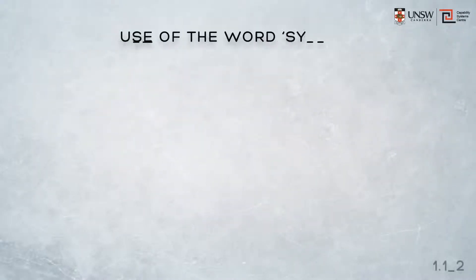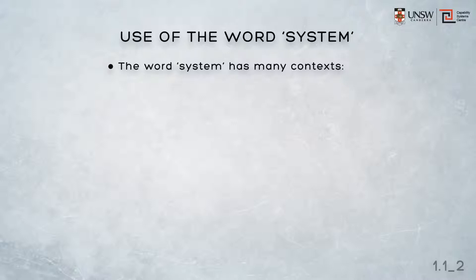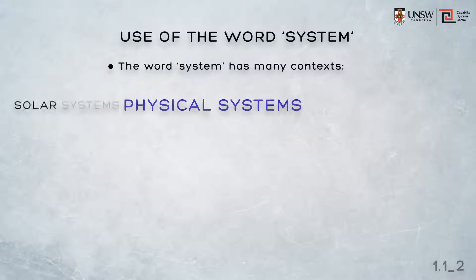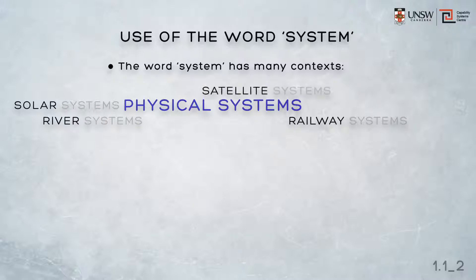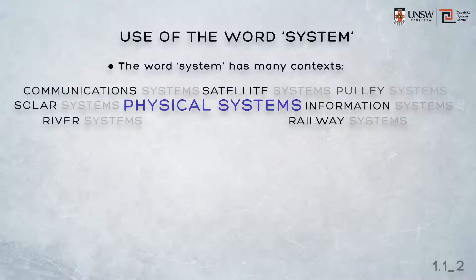That's because the word system has many contexts. There are physical systems, such as solar systems, river systems, railway systems, satellite systems, communication systems, information systems, pulley systems, nervous systems, just to name a few.